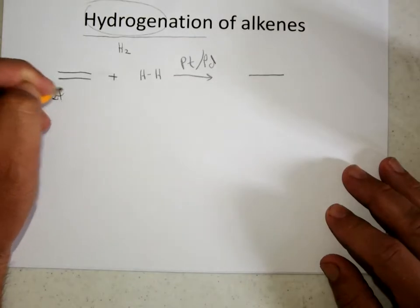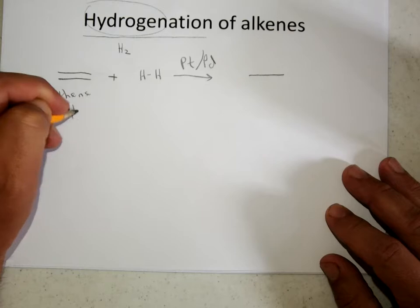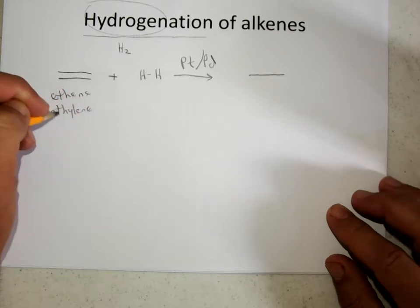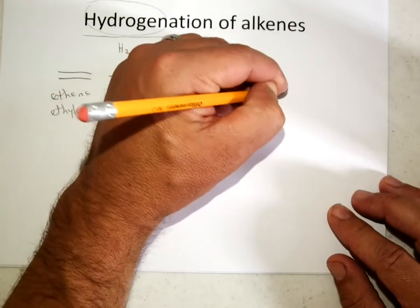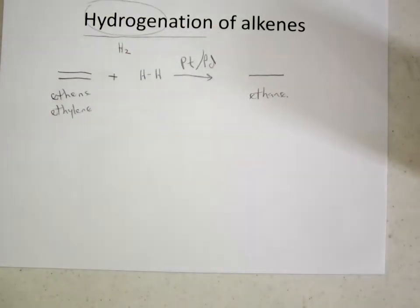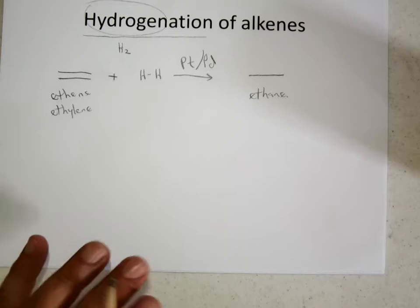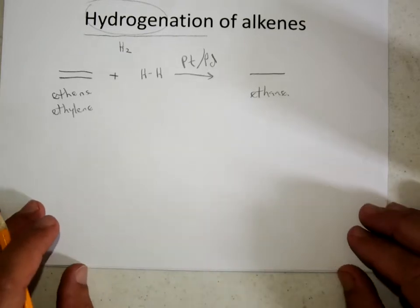So if you start with ethylene, or ethene, systematic and common name, you'll get ethane, which is its only name really. So ethylene plus hydrogen gives us ethane, and the platinum-palladium catalyst.